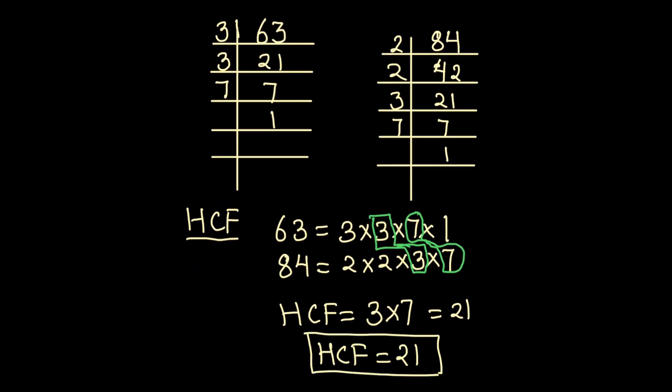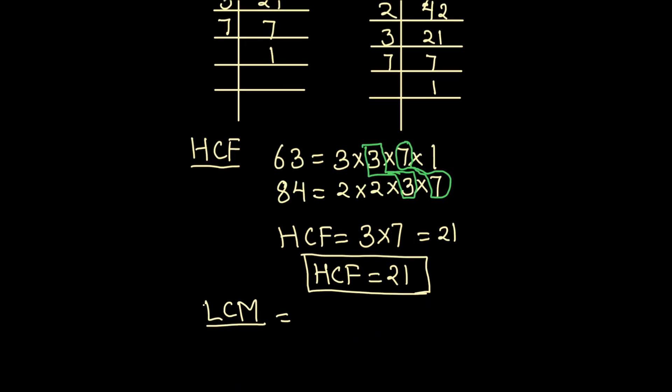Now let's find the LCM of the two numbers. For finding the LCM, we take the product of common factors and all the uncommon factors. LCM will be equal to common factors times uncommon factors.